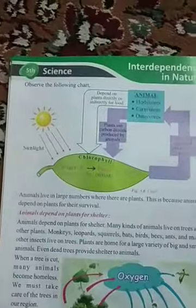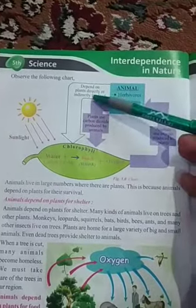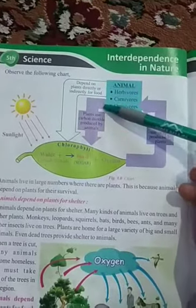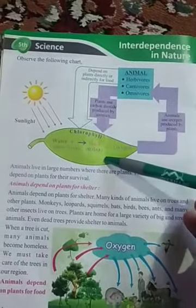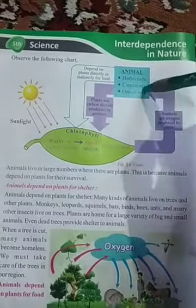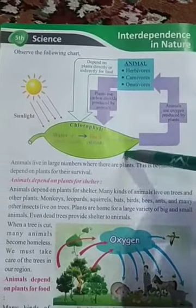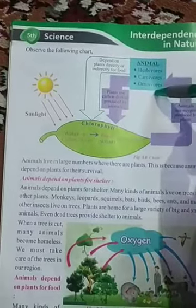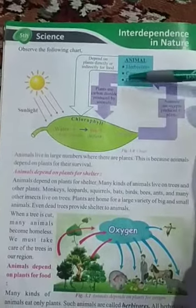Now see the chart. Animals and plants. Animals depend on plants directly or indirectly for food. Plants also depend on animals because they need carbon dioxide to breathe, and that carbon dioxide is produced by animals. Hence, animals and plants are interdependent with each other.